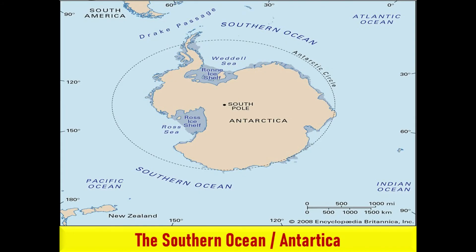The Southern Ocean, also called the Antarctic Ocean, is the fourth largest of the oceans. It sits at the South Pole and the southern part of the Earth, encompassing the southern portions of the Pacific, Atlantic, and Indian Oceans and the tributary seas surrounding Antarctica.